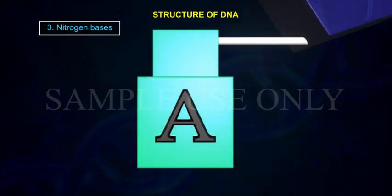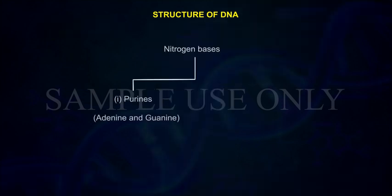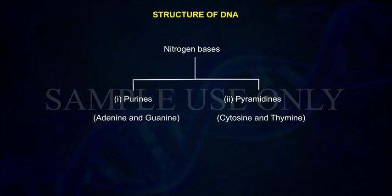3. Nitrogen base. There are two types of nitrogen bases: 1. Purines - Adenine and guanine, 2. Pyramidines.